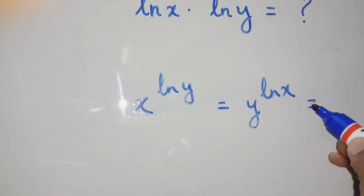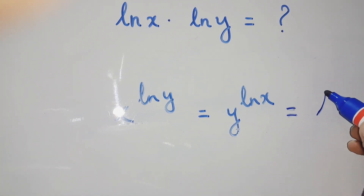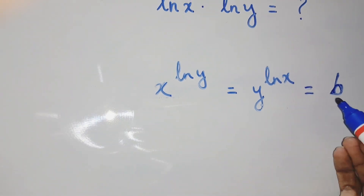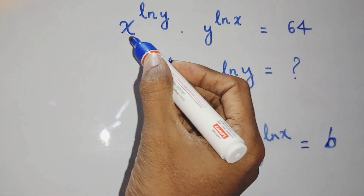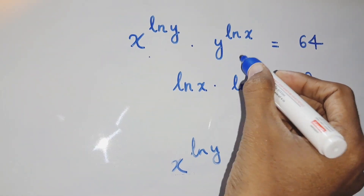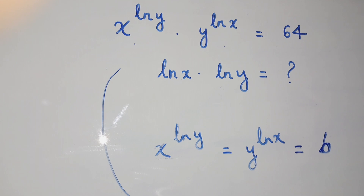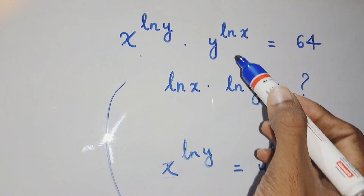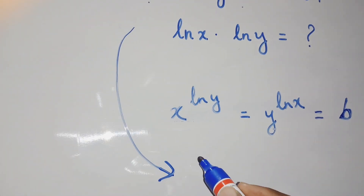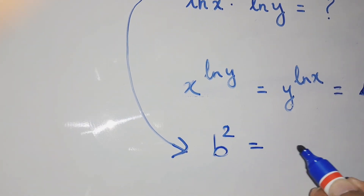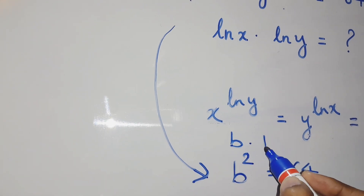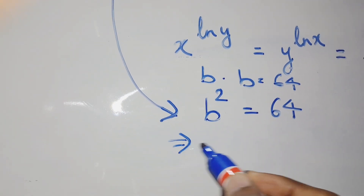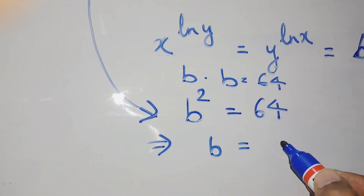We assume x to the power ln y equals some value b. Since x to the power ln y equals y to the power ln x, that is also equal to b. So the original equation becomes b times b equals 64, meaning b squared equals 64.